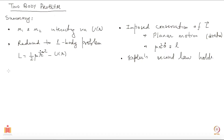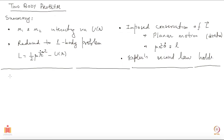Now, because the motion is happening in a plane, which I have established based on the conservation of angular momentum, I can write down the Lagrangian of the system. Writing in polar coordinates, L equals half mu r-dot squared plus half mu r-squared theta-dot squared minus u of r.